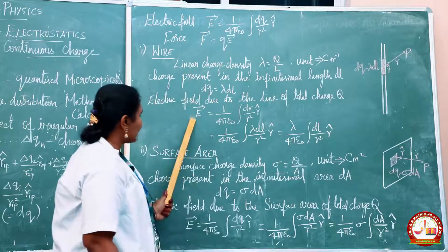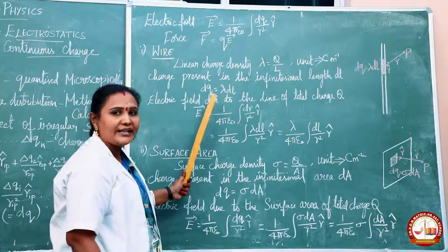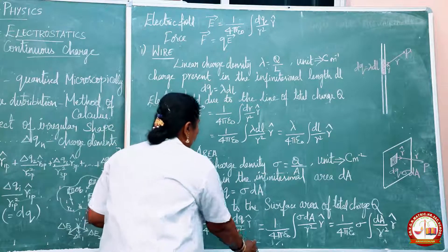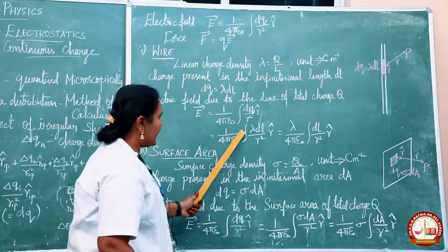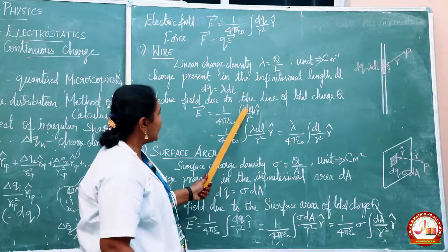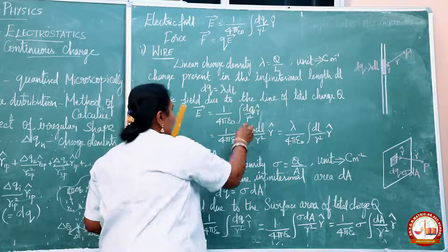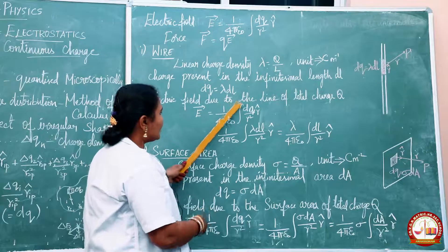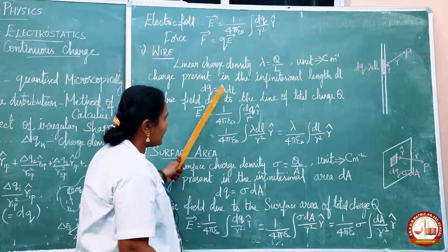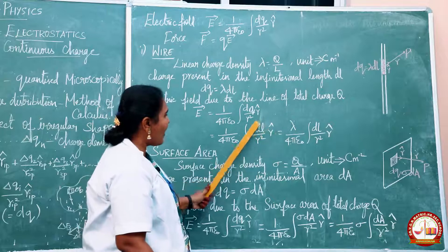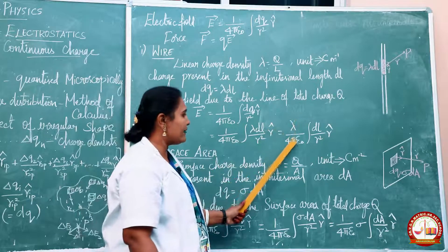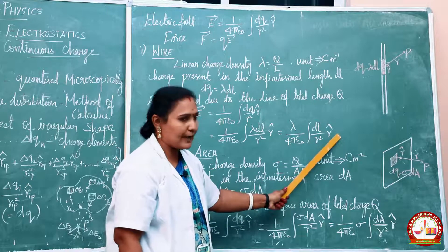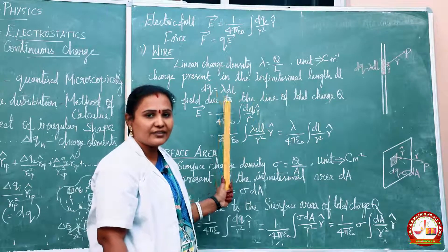With this expression we can find out the electric field due to the line of total charge Q. E vector is equal to 1 divided by 4πε₀, integral of dQ divided by R squared times R̂. Substituting dQ = λ dL, and taking λ outside the integral: E vector equals λ divided by 4πε₀, integral of dL divided by R squared times R̂. In this method we can find out the electric field for a wire.